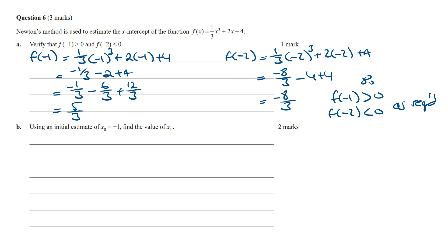Part B: Using an initial estimate of x₀ equals -1, find the value of x₁. To find the value of x₁ we need to use the Newton's method formula. And so x₁ is going to equal x₀ minus f(x₀) over f'(x₀). And so this is going to be -1 minus f(-1) over f'(-1).